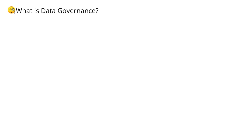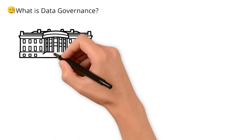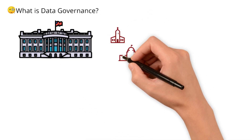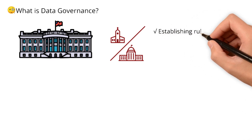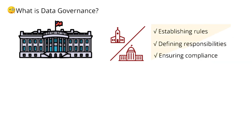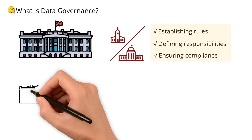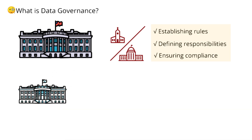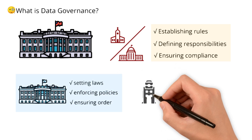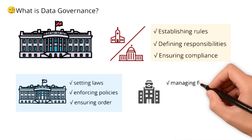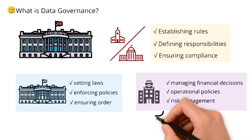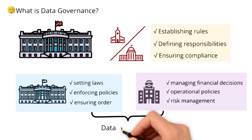Before we dive into data governance, let's first understand governance in general. Governance, whether at a federal, state, or corporate level, is about establishing rules, defining responsibilities, and ensuring compliance — to create a well-structured and efficiently managed system. In government, governance means setting laws, enforcing policies, and ensuring order. In corporate governance, it involves managing financial decisions, operational policies, and risk management.